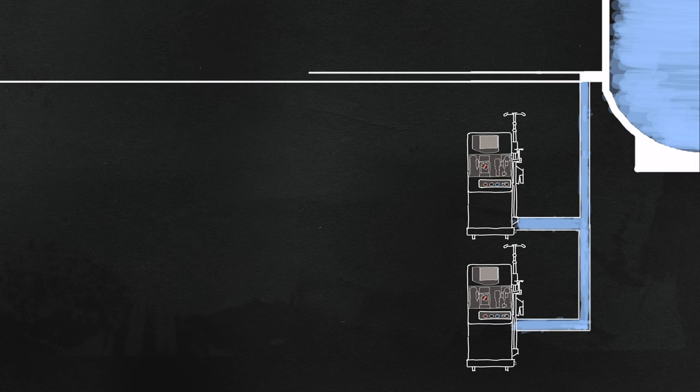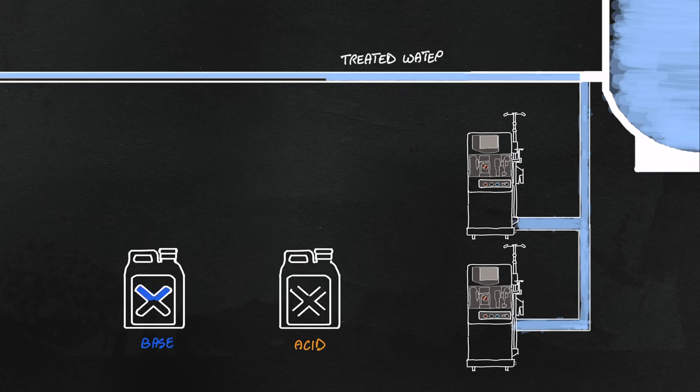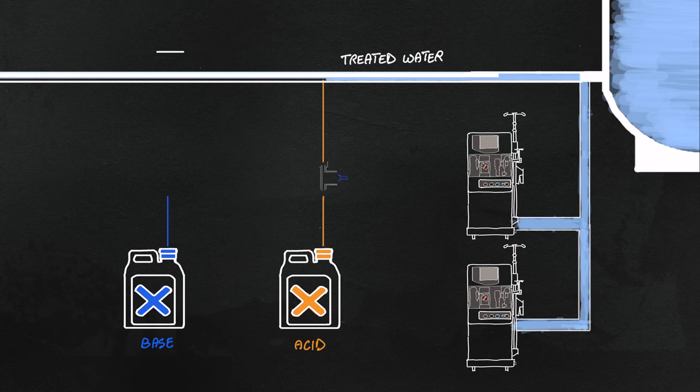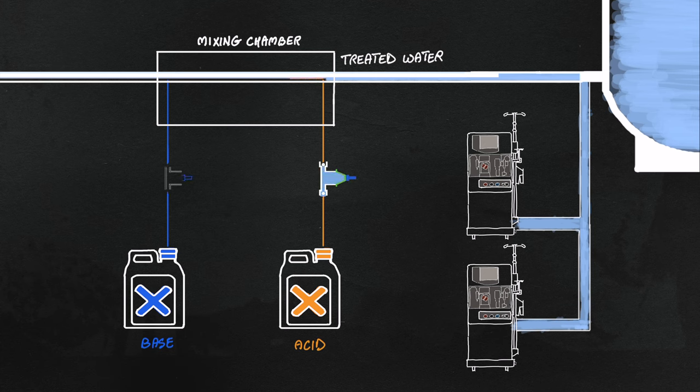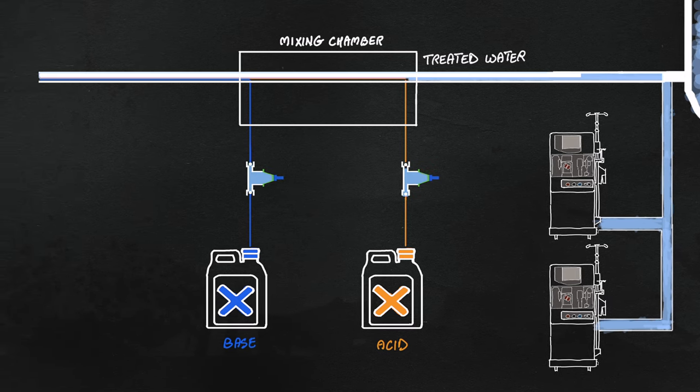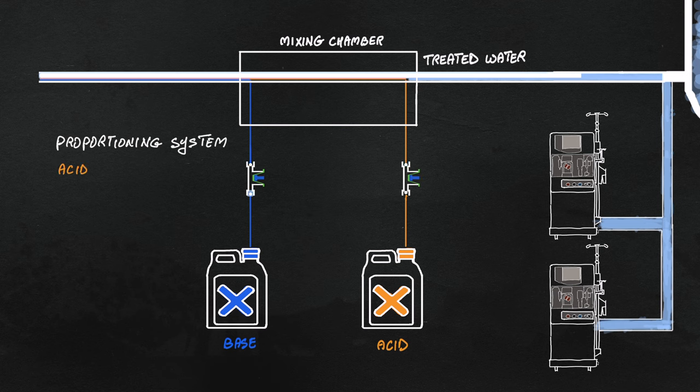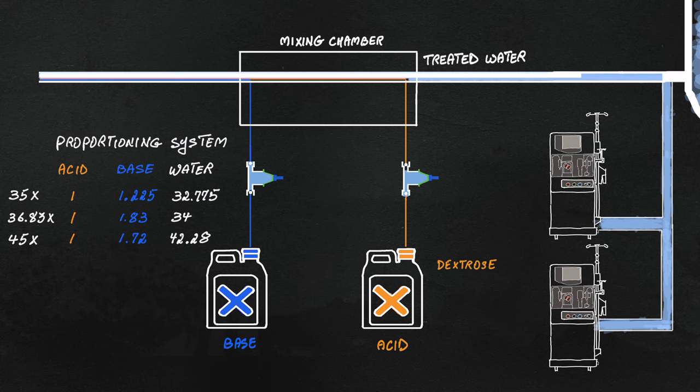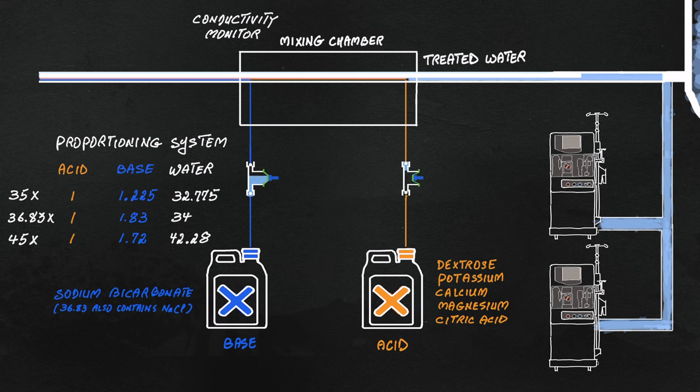Dialysate production happens in a dialysis machine, using a proportioning system, where water and electrolyte concentrates are mixed to produce dialysate. The mixing occurs in the dialysate circuit by adding specific parts from acid and base concentrates to water. It is also warmed and de-aerated during this process. There are several proportioning ratios, depending on the type of machine used to generate the dialysate. And each proportioning ratio requires its own acid-base concentrate preparations.